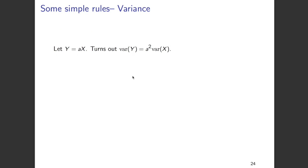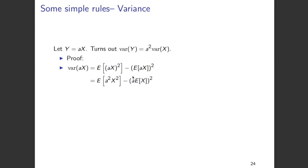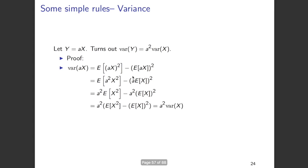To find the variance of y, we again start from first principles. Variance of y equals variance of ax, which equals E[(ax)²] minus [E(ax)]². This gives E[a²x²] minus [a·E(x)]². Since a is a constant, we take it out of the expectation in the first term to get a²·E[x²] minus a²·[E(x)]². The a² is common in both terms, so taking it out gives variance of y equals a² times variance of x. The standard deviation of y is therefore a times the standard deviation of x — the variance gets scaled by a squared.